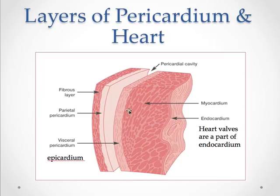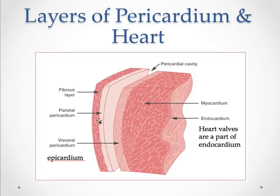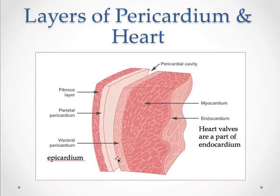Looking at the pericardial layers: the outermost is the fibrous layer, which has a high amount of fibrin, making it stronger and tougher. Inside that is the parietal pericardium — a serous lining that's thin and allows fluid to pass easily. Between the parietal and the visceral pericardium, which lies on top of the heart itself, there is a little bit of fluid in the pericardial cavity. That fluid allows the heart to move unimpeded. Visceral means inner — the visceral lining is physically attached to the muscular portion of the heart, the myocardium.